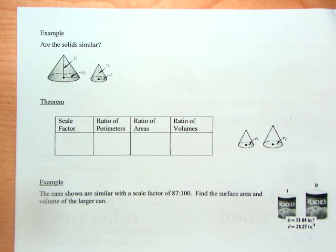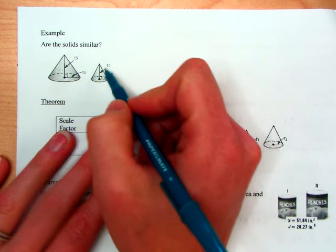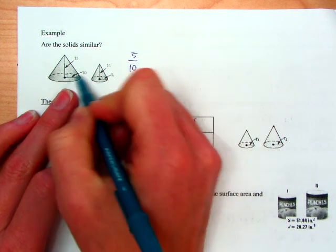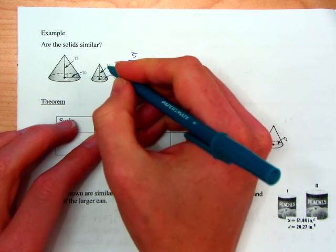On the back, one more. Are the solids similar? So you're still checking to see if their scale factors or their measures that match up, the ones that correspond to each other, are the same. So the 5 goes with the 10. And it doesn't matter which order you do this in, so if you did 10 over 5, that's totally fine. And the other one is 10 to 15.